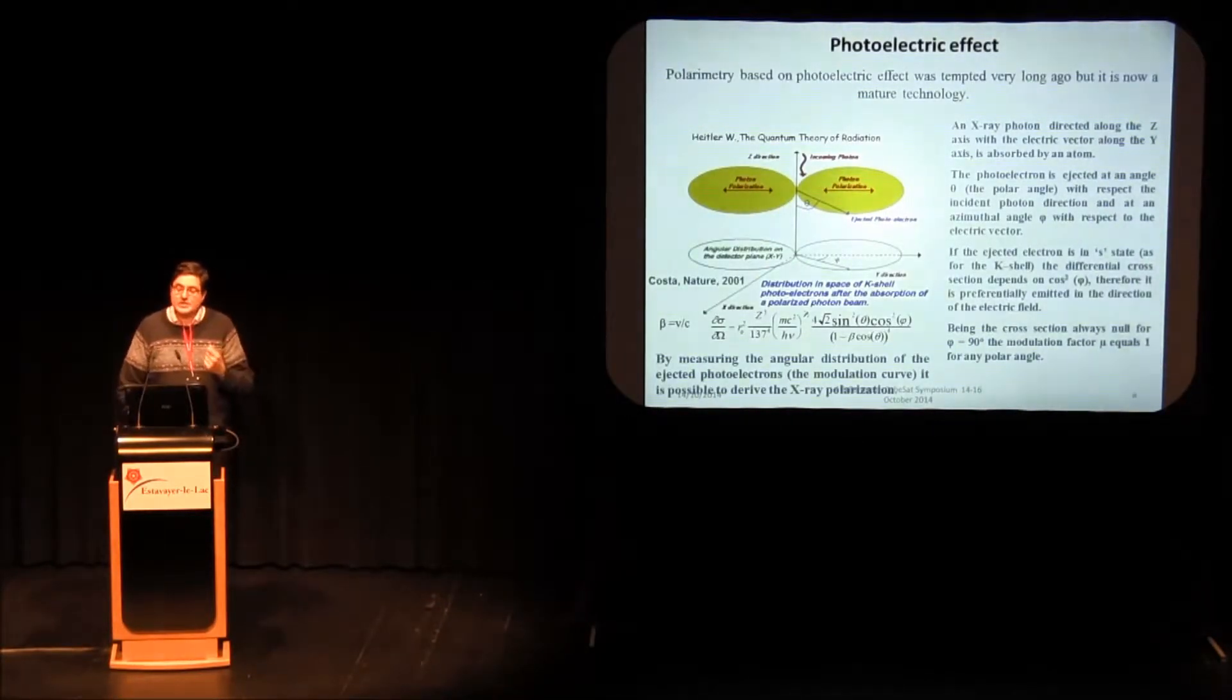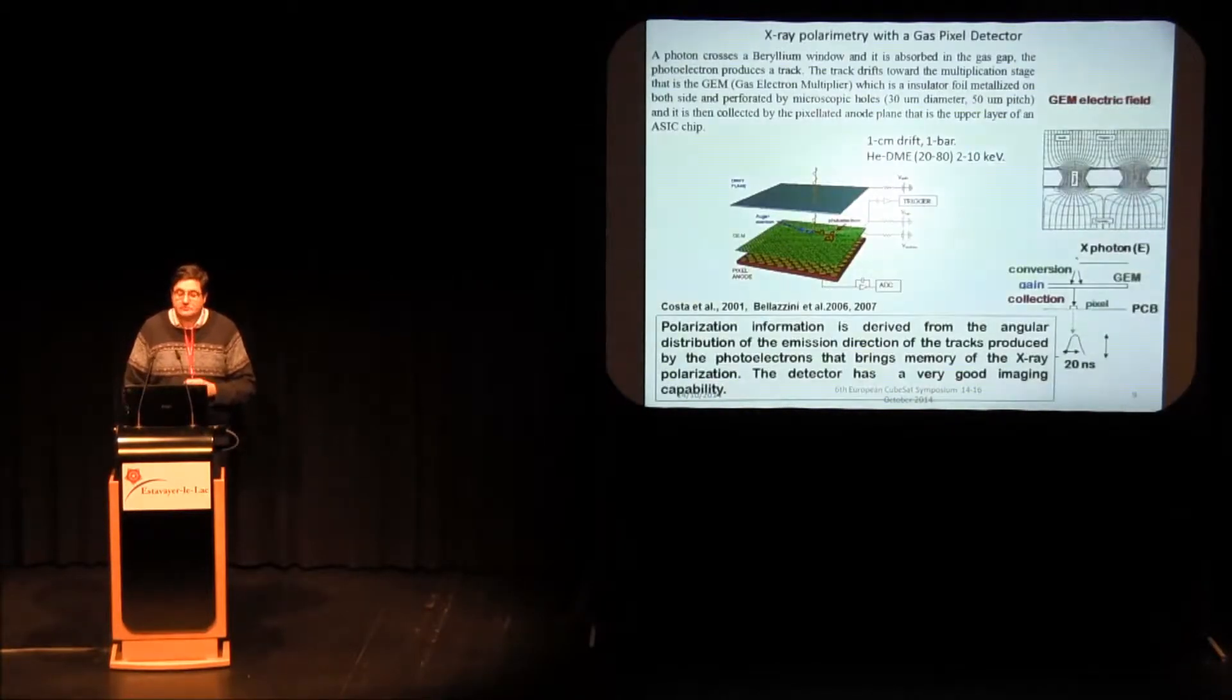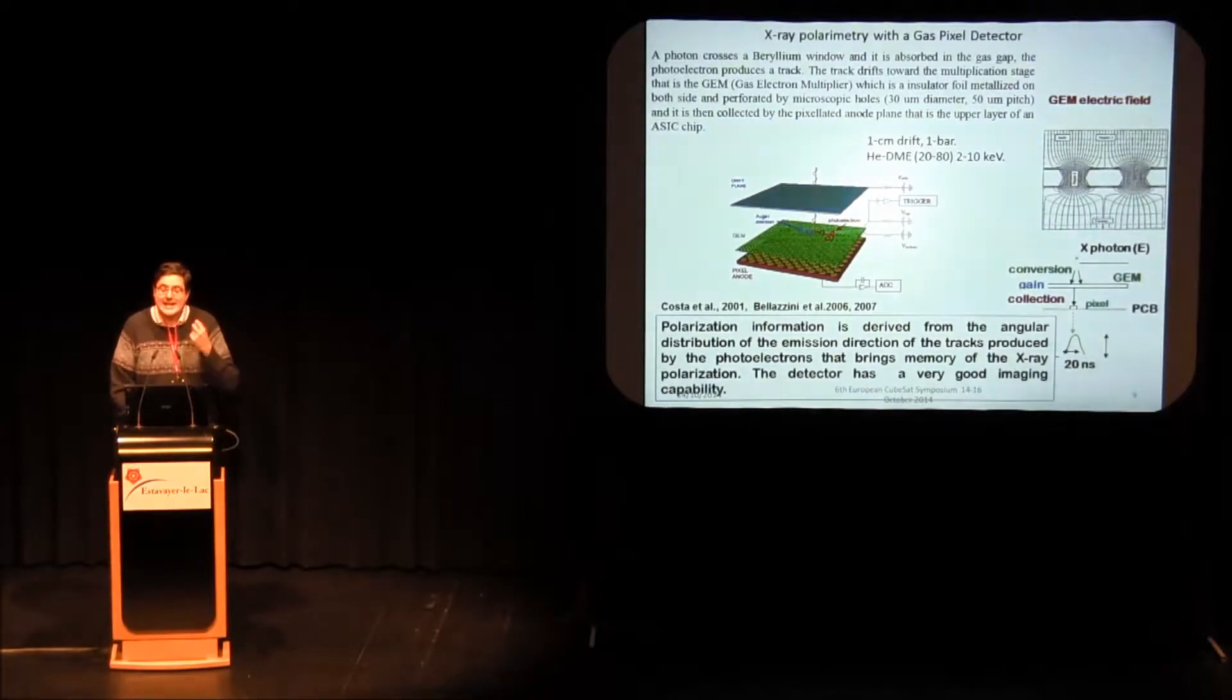In order to measure the polarization for solar flares, we want to use the photoelectric effect for which we have a photon that interacts with an atom, with the K-shell of an atom. A photoelectron is ejected, and is ejected preferentially parallel to the electric field of the incoming beam from this cross section. The practical implementation to use this effect is the gas pixel detector. It is a gas cell with a beryllium window, very thin, that keeps the gas inside the cell but lets the X-rays come through and interact with the gas.